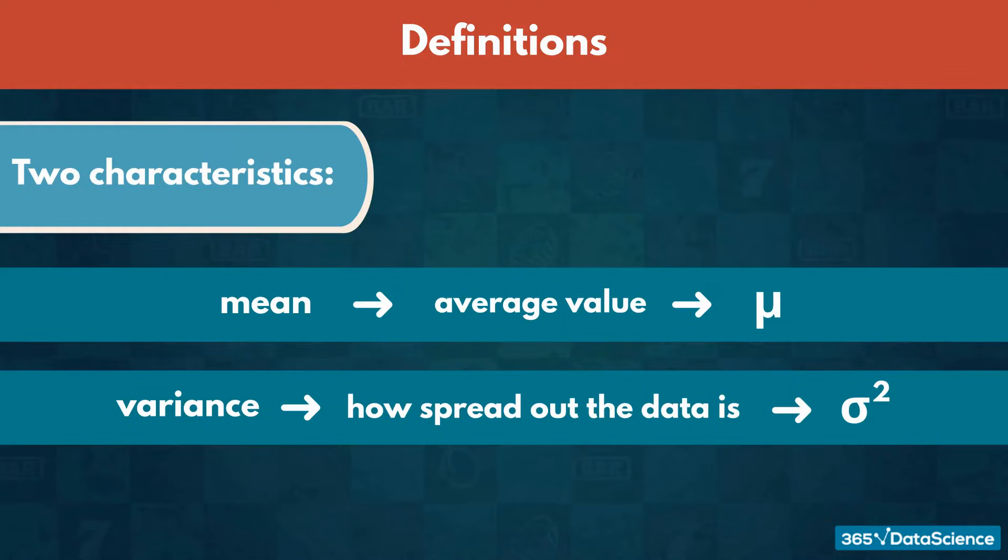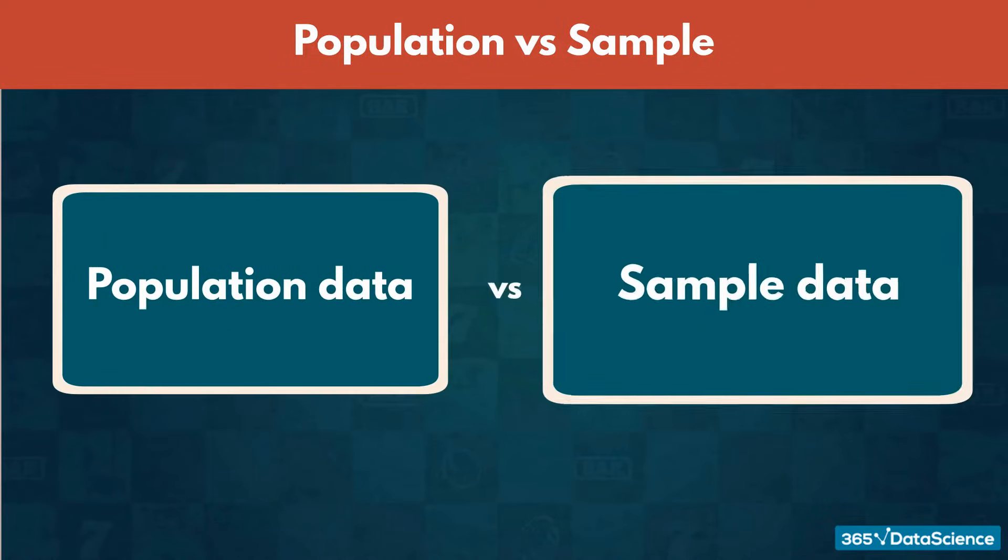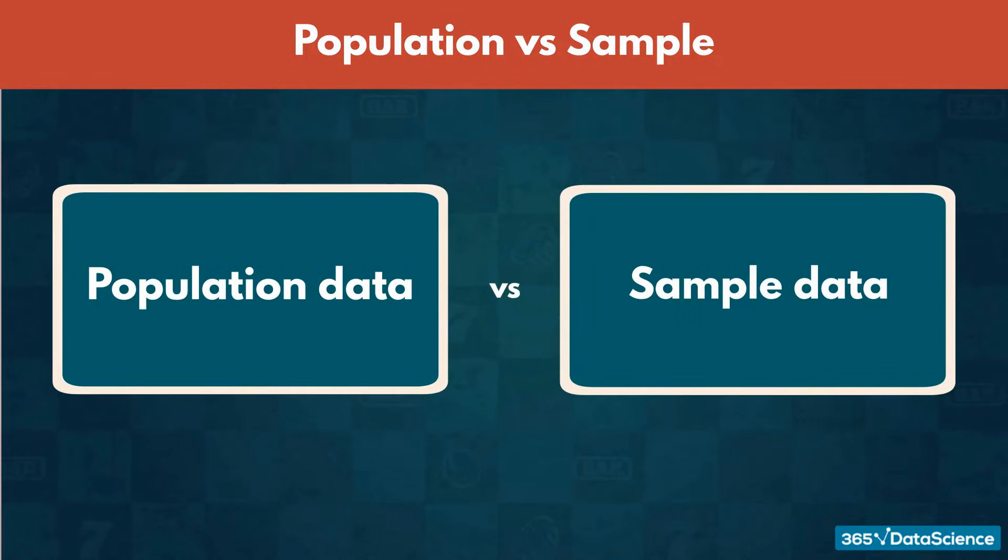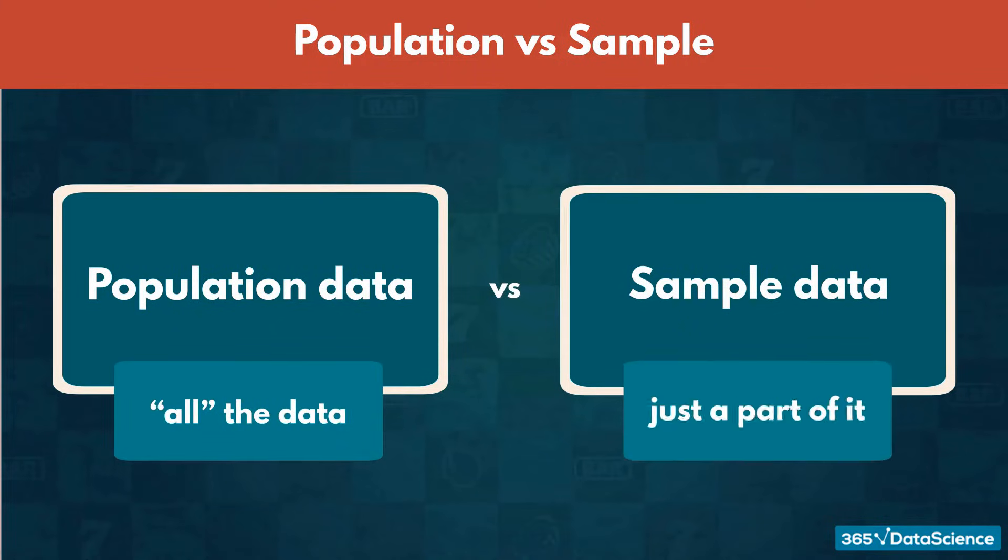When analyzing distributions, it is important to understand what kind of data we are dealing with. Population, or sample data? Population data is the formal way of referring to all the data, while sample data is just a part of it.